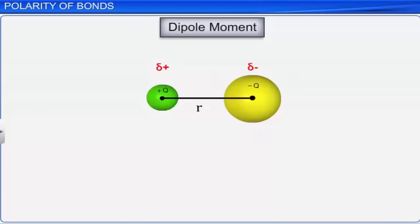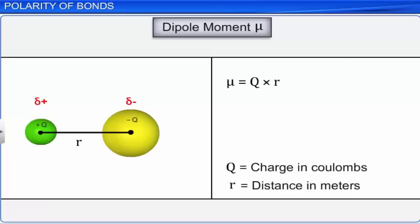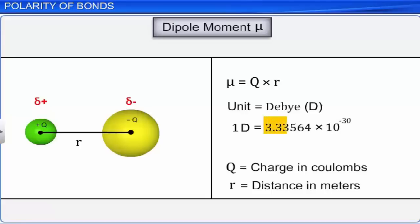Dipole moment is denoted by mu, and is equal to the product of charge q in coulombs and distance of separation r in meters. Dipole moment is a vector quantity, which means it has both magnitude and direction. The unit for dipole moment is called Debye, denoted by D. 1 D is equal to 3.33564 × 10⁻³⁰ C·m.